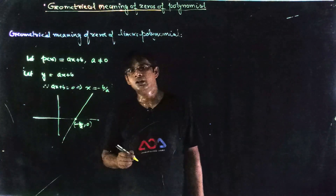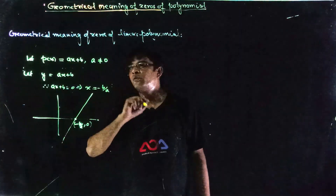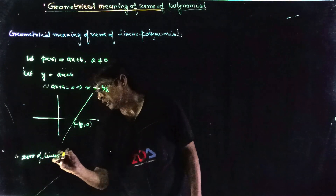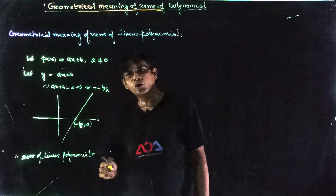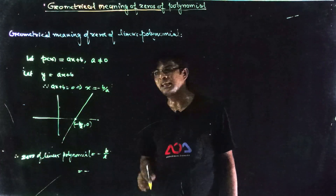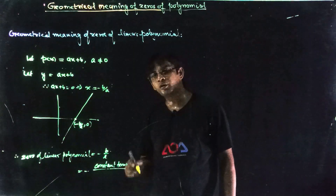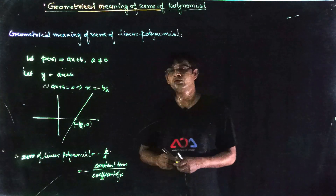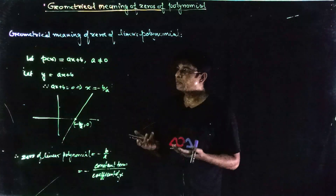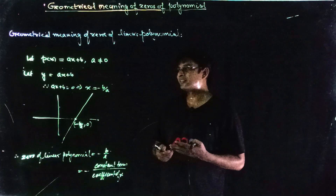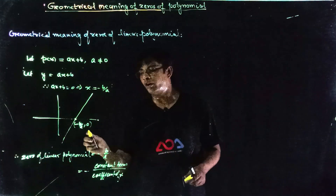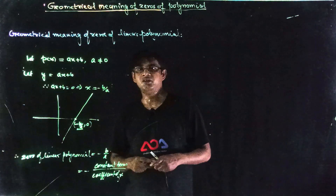This is a relation between zeros and the coefficient and constant of a linear polynomial. Therefore, the zero of a linear polynomial is -b/a, where b is the constant term and a is the coefficient of x. This is the relation between the zero of a linear polynomial to its coefficient and constant term. Whenever you draw a graph for a linear polynomial, it will draw a straight line, it will always cut the x-axis, and the x-coordinate at that point will always give us the real zero.